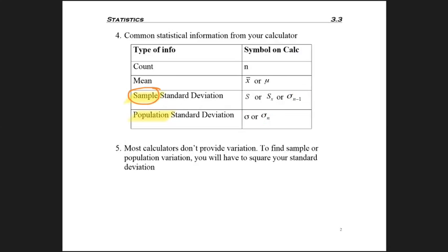The only other thing to watch out for is most calculators don't provide variation, because if you remember, it's the number before the square root, or just the standard deviation squared. So what we'll do is we'll just take our standard deviation and square that if we ever need to calculate variation.